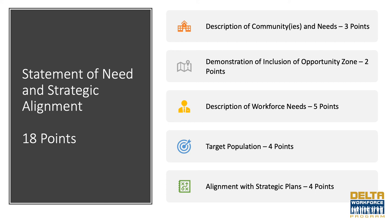The statement of need is the foundation of the application and must clearly explain the reason for the proposed project. It must also support the grant initiative's goal of creating economic prosperity and gainful employment opportunities for eligible residents within the DRA or ARC impacted areas so they may remain and thrive in these communities. The statement of need must describe the need for assistance, the nature and scope of challenges to overcome, and the consequences of not addressing the needs. The needs described must align with the target population served. There are five scored elements.